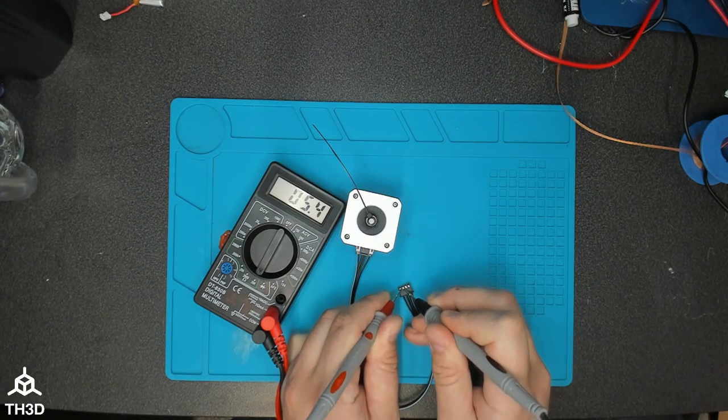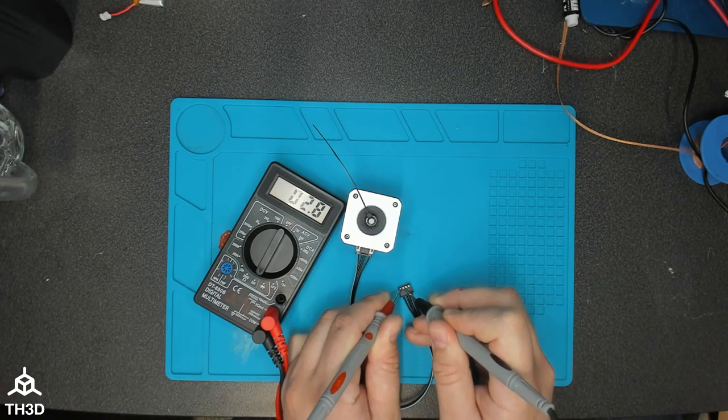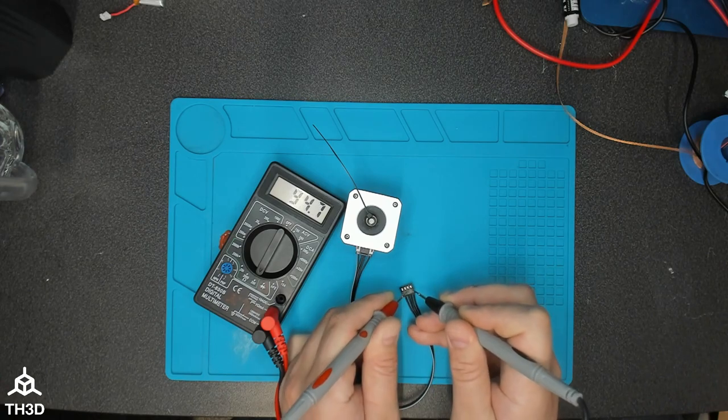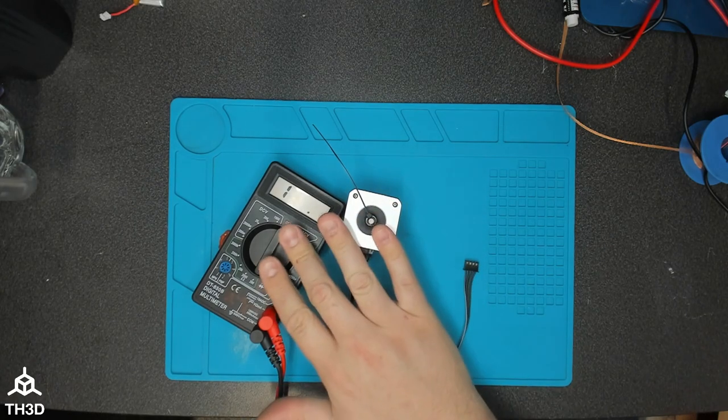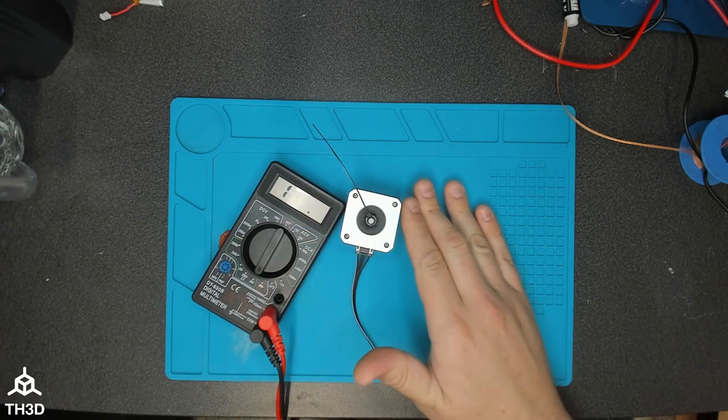But again, just for a quick recap. If I take the reading here on the first two pins that are together we get a 2.8 reading. And again here we get 2.7. This resistance is going to be different depending on what motors you have.